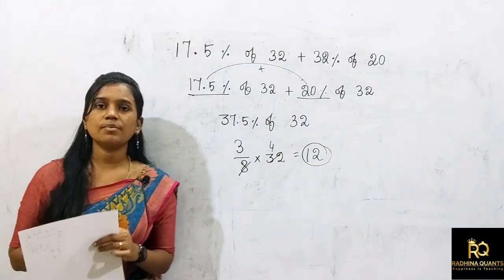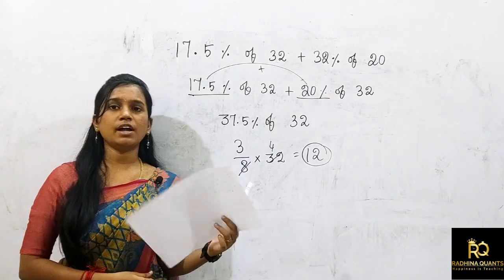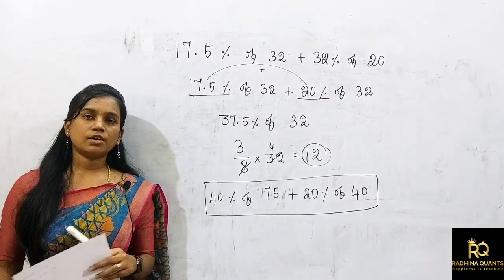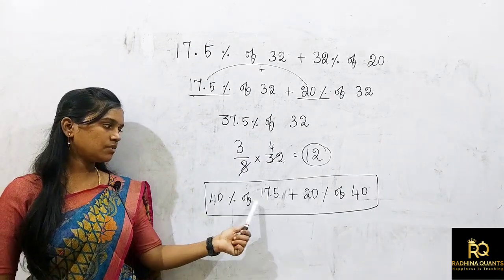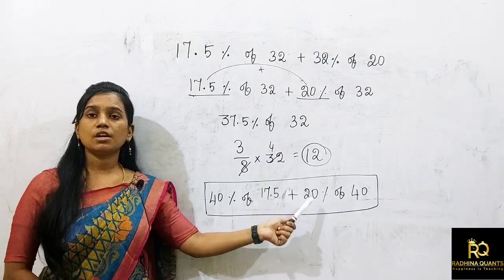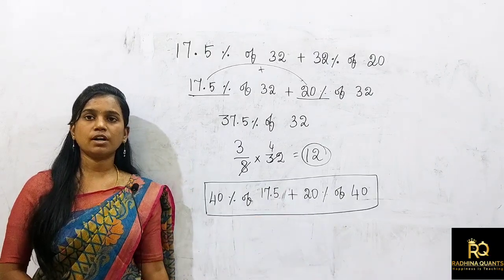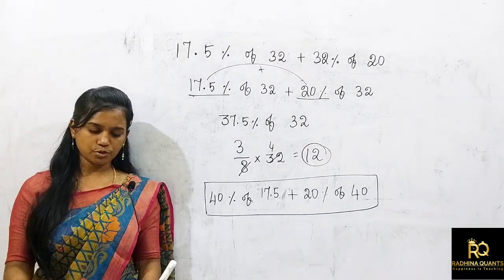This question is easy. The workout sum is 40% of 17.5 plus 20% of 40. You can post your answer in the comments.